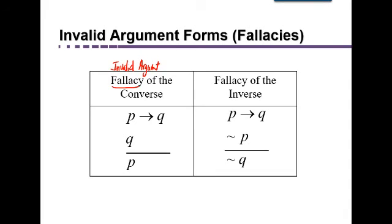Why is it the fallacy of the converse? Well, remember that when you have the original conditional statement P implies Q, the converse of that is Q implies P. And what we have here is if we assume P implies Q, and then we see that Q has happened, we incorrectly assume that that means P must have happened. So based on this, we conclude this must also be true, which is not the case.